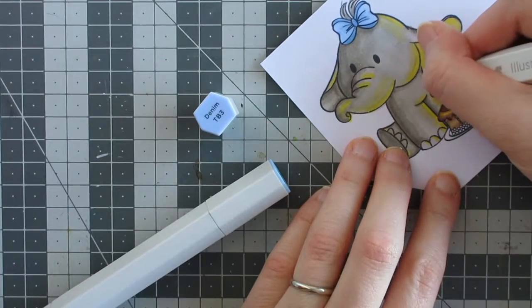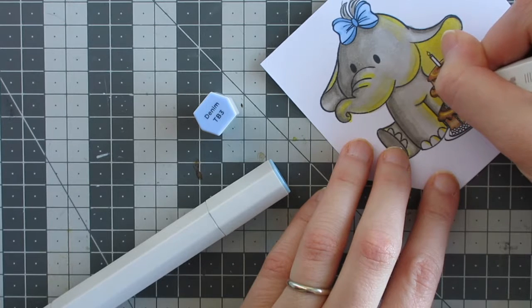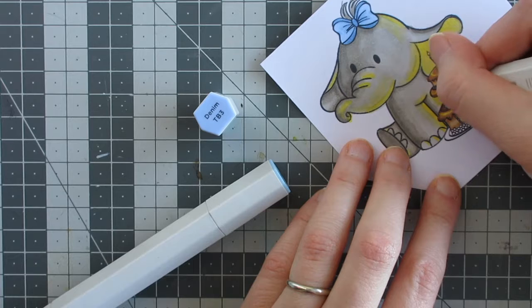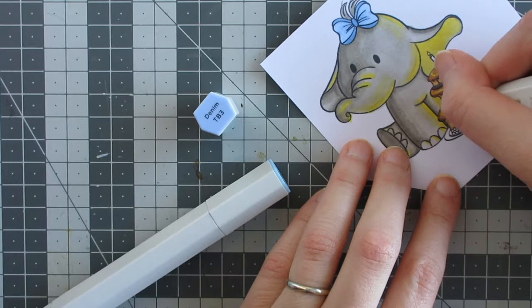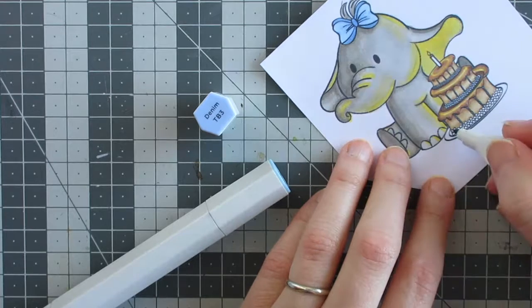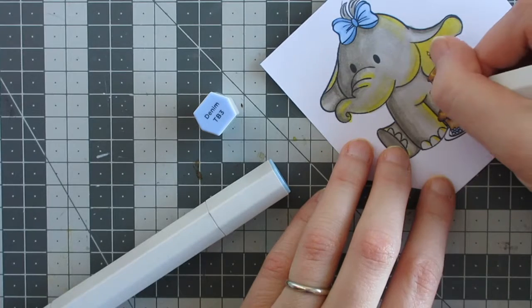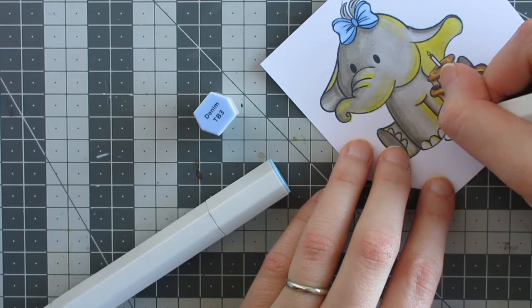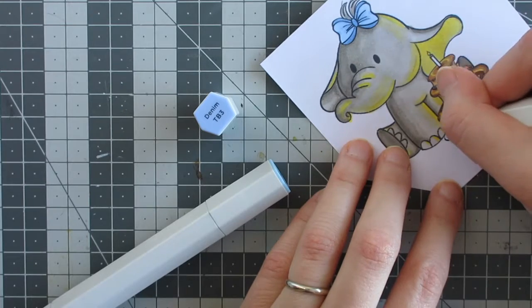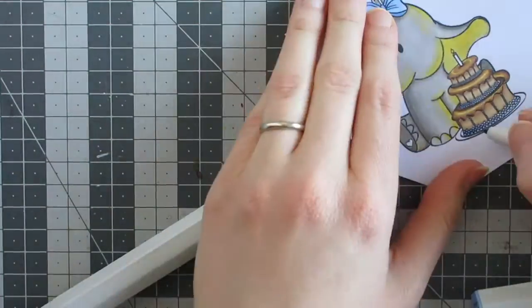Then rather than bringing any other colors in, I decided to use the same blues that I had used on the elephant's bow to color the flowers and other little bits of decorations on the cake. I'm using the darkest blue for those and I will use the lighter blue on the plate. Both blues I use to color in the candle and the heart on the elephant's foot as well, but I believe I do that off camera.